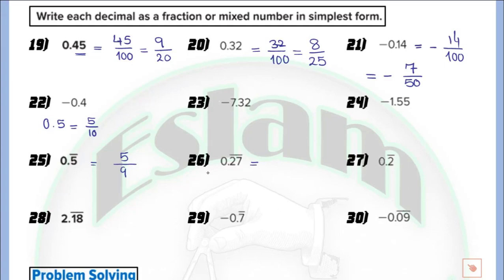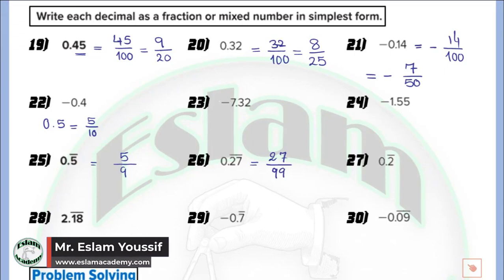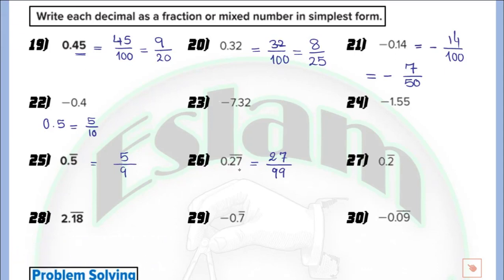In question number 26, we have 0.27 repeating. We write 27 as the numerator. Since there are two digits at the right of the decimal repeating, the denominator is 99. For a normal decimal with two digits it would be 100, but for a repeating decimal with two digits it is 99. Now 27 over 99 is not the simplest form — we can divide both by 9. So 27 divided by 9 equals 3, and 99 divided by 9 equals 11, giving 3 over 11.